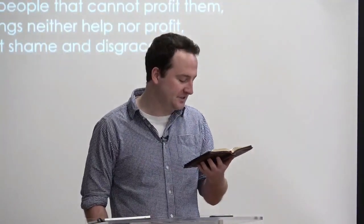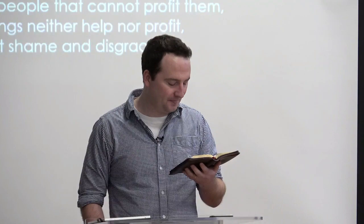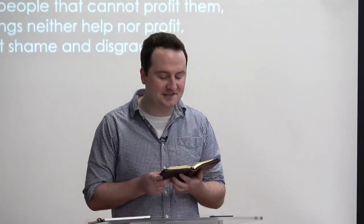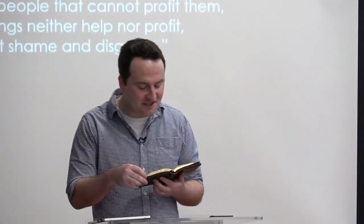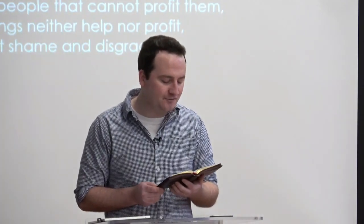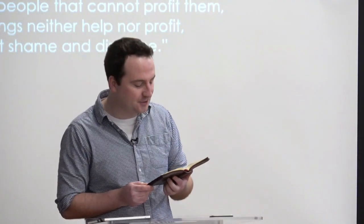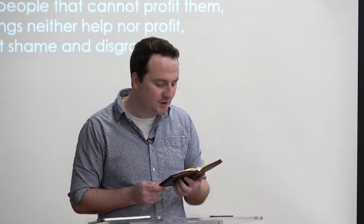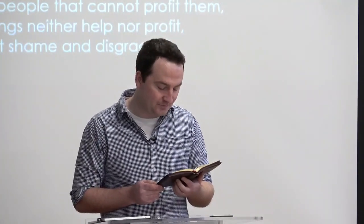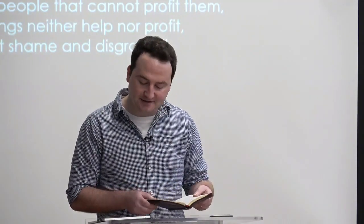Our stubborn children, declares the Lord, who carry out a plan but not mine, who make an alliance but not of my spirit, that they may add sin to sin, who set out to go down to Egypt without asking for my direction, to take refuge in the protection of Pharaoh and to seek shelter in the shadow of Egypt. Therefore shall the protection of Pharaoh turn to your shame and the shelter in the shadow of Egypt to your humiliation. For though his officials are at Zoan and his envoys reach Hanez, everyone comes to shame through a people that cannot profit them. That brings neither help nor profit, but shame and disgrace.